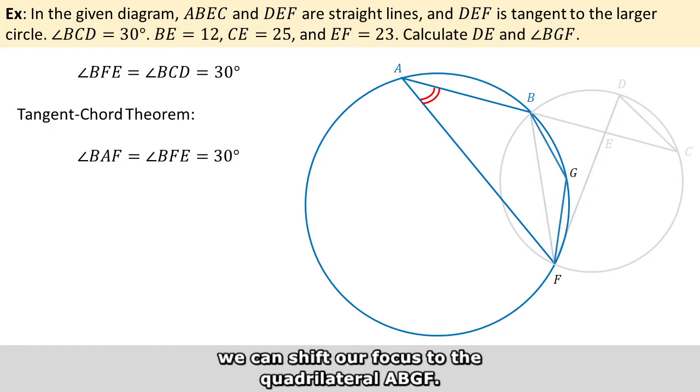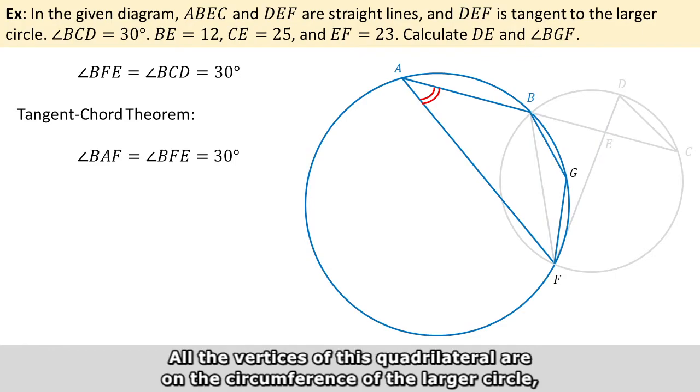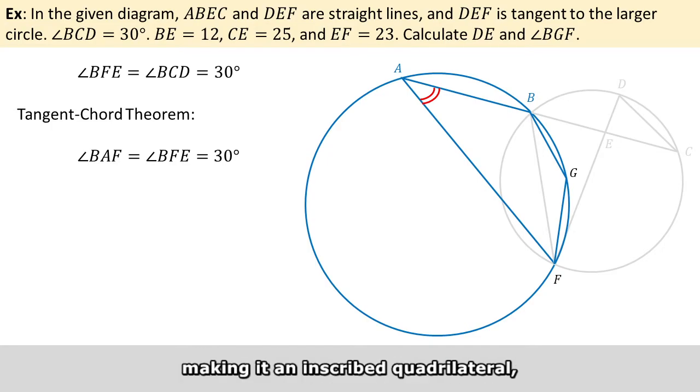All the vertices of this quadrilateral are on the circumference of the larger circle, making it an inscribed quadrilateral, also known as a cyclic quadrilateral.